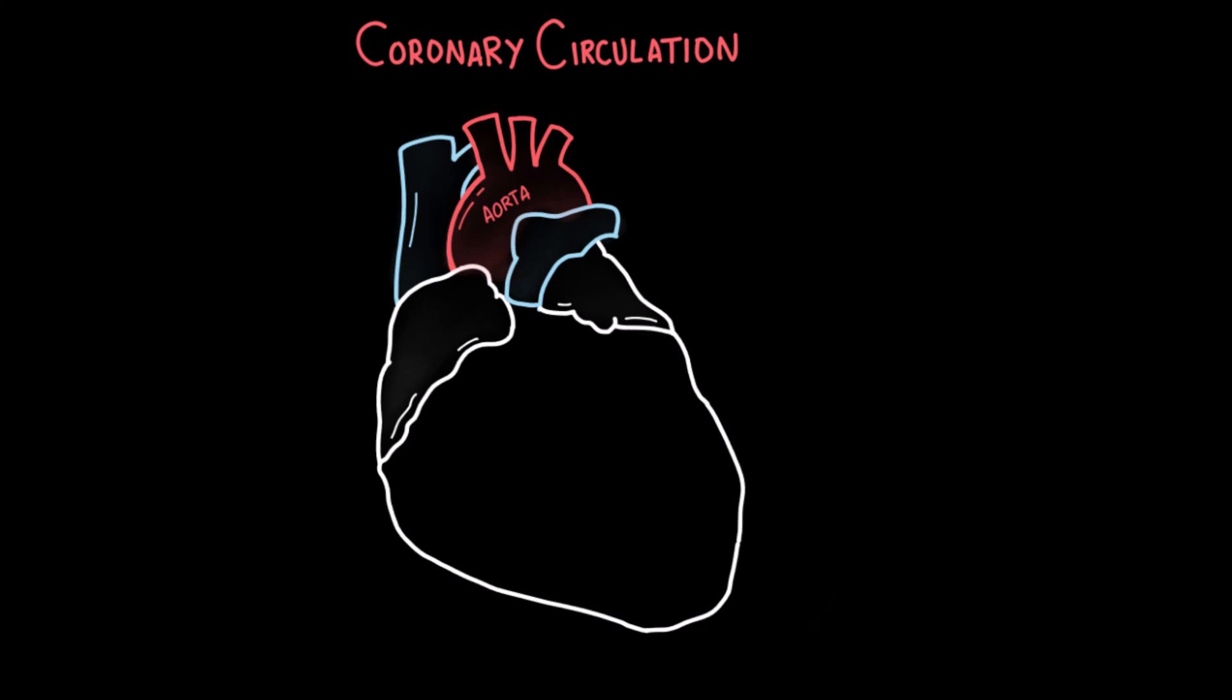So let's take a closer look at how they're structured and what they do. We have two main coronary arteries, the right and the left. Both arise from the base of the ascending aorta, just above the aortic valve.